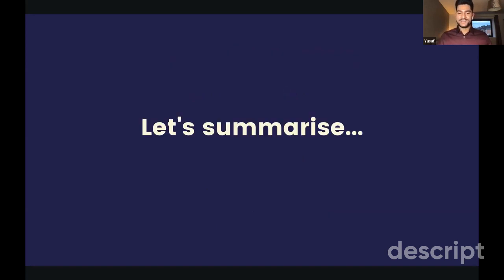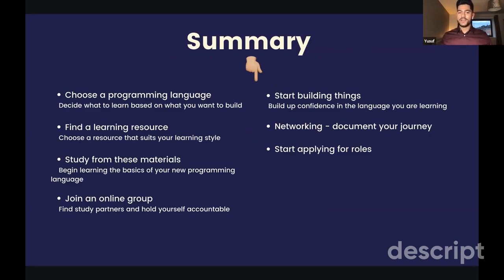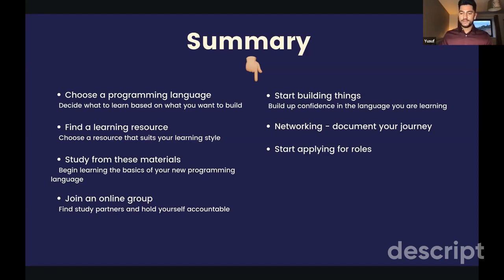To summarize: first, pick a programming language based on your interests — front end, back end, mobile, or web. Then find a learning resource that suits your style. Study from these materials little and often. Join an online group to find others studying alongside you. Once you've learned a bit, start building things and post them online, ideally on GitHub. Network throughout the process, get your name out there, and start applying for roles once you're ready.